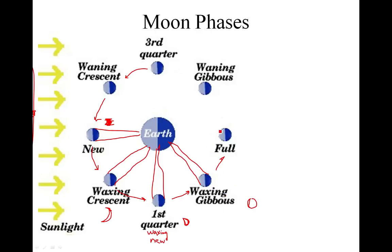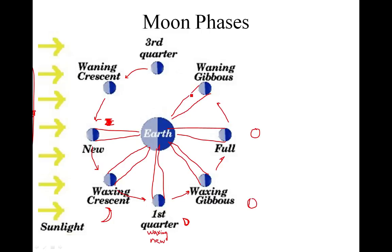Moon keeps cruising along and we get to here — now you are seeing the full moon, the full circle. Moon keeps going. Now we're over here. You're going to see three quarters of the moon lit up with a little bit of darkness. Which side? Looking up at the moon, it's going to be the left side. So now we have the left three quarters — that's a waning gibbous.